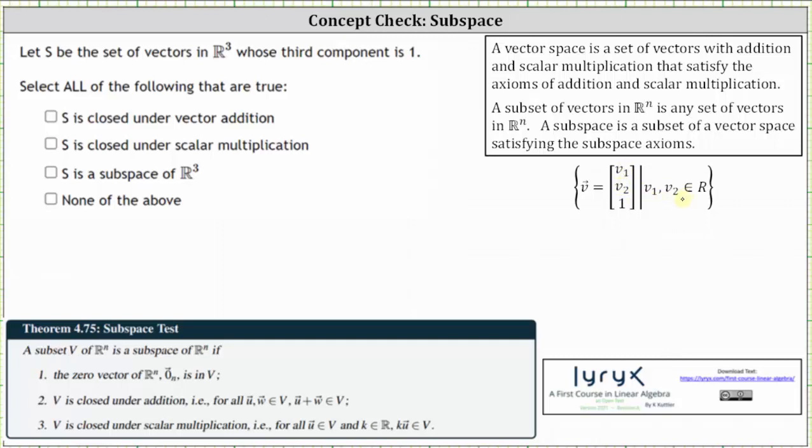We know that R3 is a vector space and S is a subset of R3. Our goal is to determine if the subset S is a subspace, which is a subset of a vector space satisfying the subspace axioms shown below.